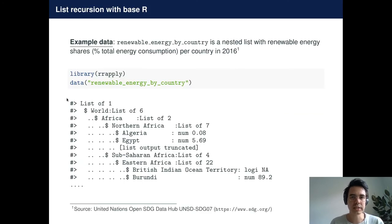As an example dataset, I will load a nested list that is included in the RRApply package, which contains renewable energy shares as a percentage of the total energy consumption per country in 2016. We can see that the countries are organized according to their geographical location, and we also observe that certain regions or countries contain missing values.